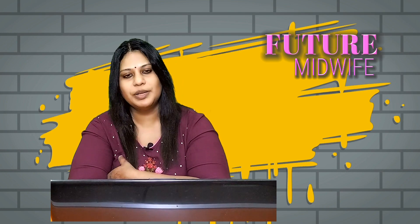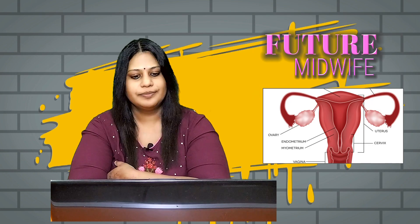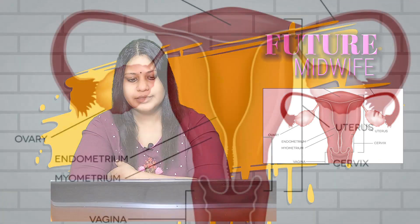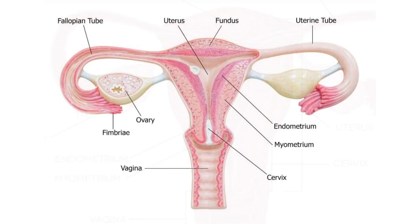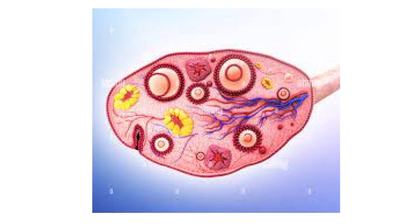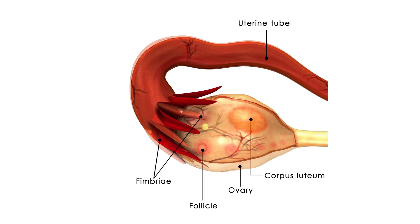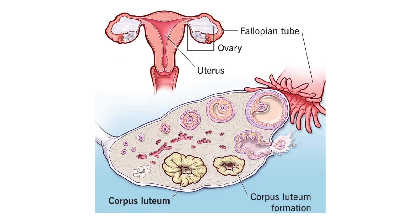Next, we move on to the ovaries. The ovaries are the female gonads. There are two, one at each entrance to the fallopian tube. They are each about 2 to 3 cm in length, about the size of an almond, and are located within the pelvic cavity. The ovaries are attached to the uterus via the ovarian ligament. The ovarian stroma forms the bulk of the adult ovary. Oocytes develop within the outer layer of this stroma, each surrounded by supporting cells. This group of an oocyte and its supporting cells is called a follicle.